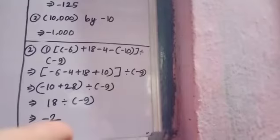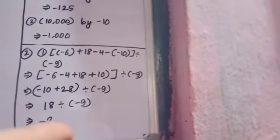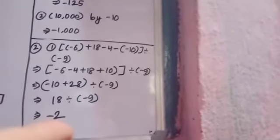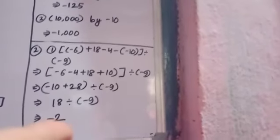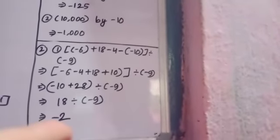So we will solve minus 6 minus 4 is minus 10, and plus 18 and plus 10 is plus 28, divisible by minus 9. So we are getting minus 10 plus 28, that is 18, divisible by minus 9. How much we are getting? Minus 2 is the answer.